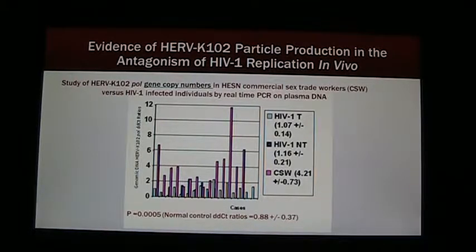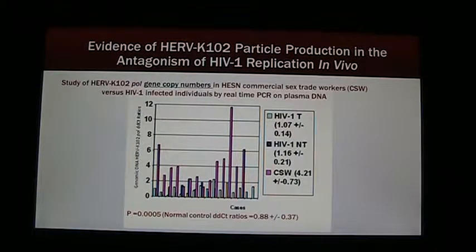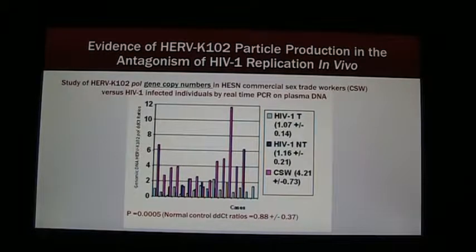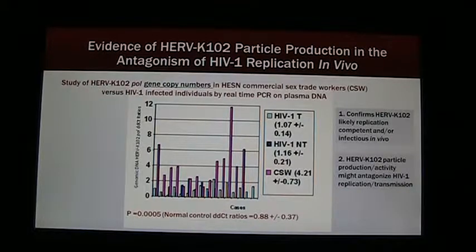When we looked for evidence of a role of HERVK particles in protection against HIV transmission, we found evidence of a five-fold increased genomic copies in the HESN — HIV-exposed seronegative — commercial sex trade workers. HIV patients, whether on therapy or not, were not different from normal. Only the HESN had higher levels of integrations. This confirms HERVK102 is likely replication-competent and/or infectious in vivo, and HERVK102 particle production activity might antagonize HIV replication and transmission.